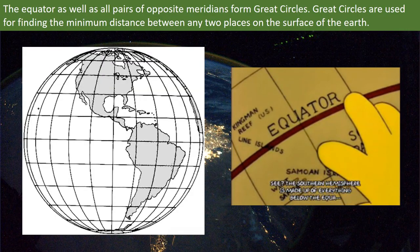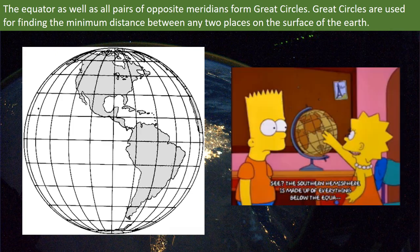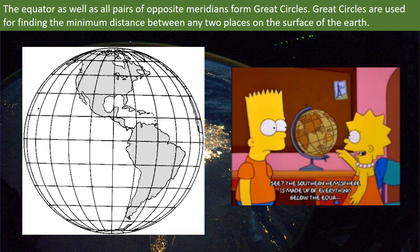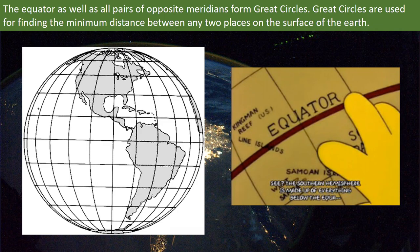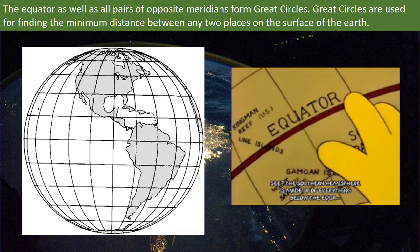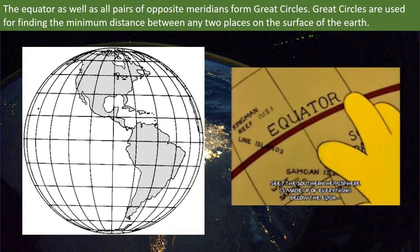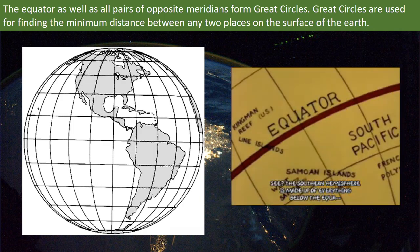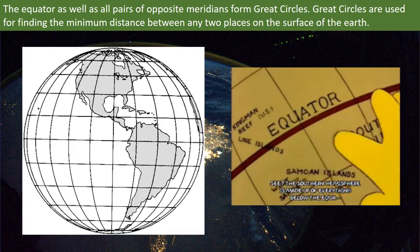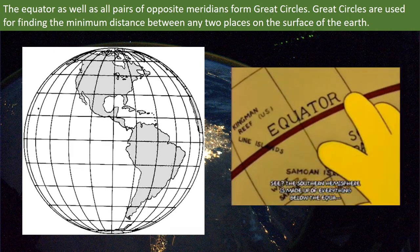The equator as well as all pairs of opposite meridians form great circles. All the lines of longitudes meet at the poles, intersecting the Earth into half. Thus, a great circle always splits or divides the Earth into two halves. So, all pairs of opposite meridians form great circles. They are used for finding the minimum distance between any two places on the surface of the Earth.